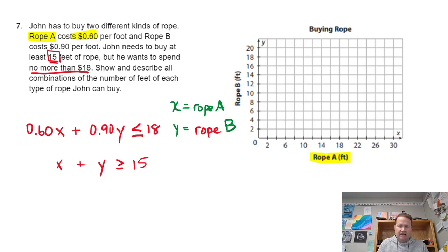x plus y is greater than or equal to 15. I'm just going to graph it using intercepts because everything here is positive. I guess I could go the same route. And let's take away x on both sides. What are we going to get? Y is greater than or equal to negative x plus 15. So let's go ahead and graph that. Starts at 15. There is 15 right there.